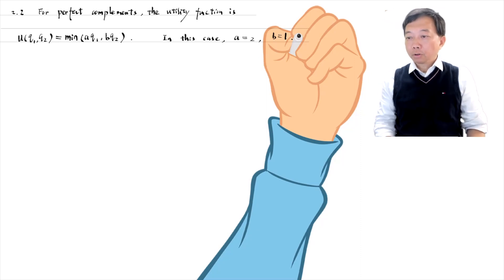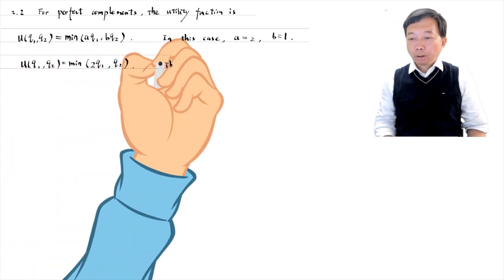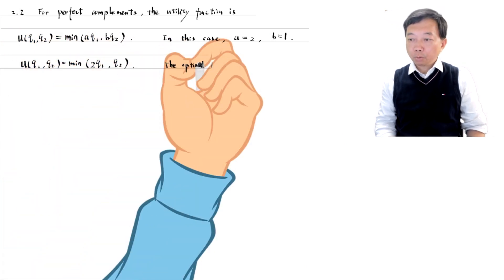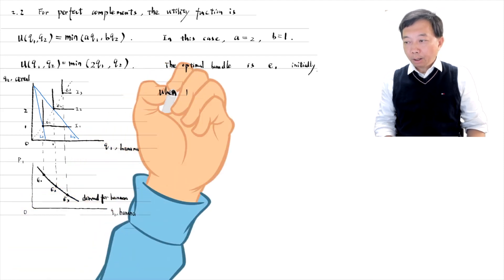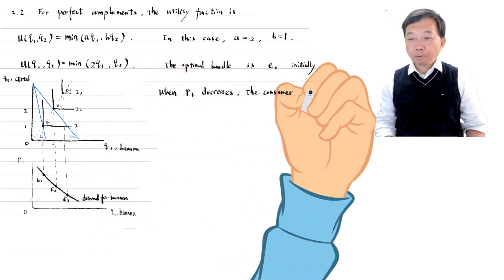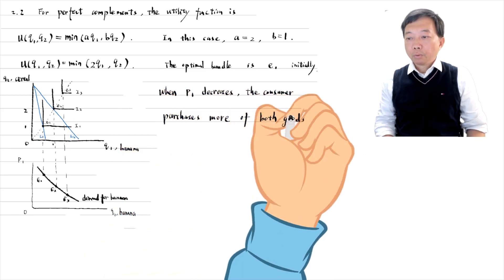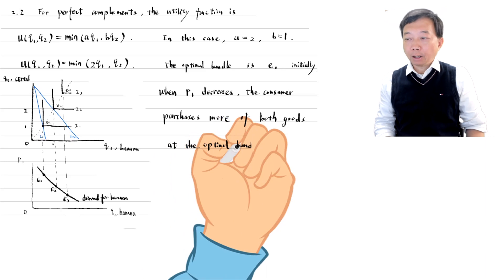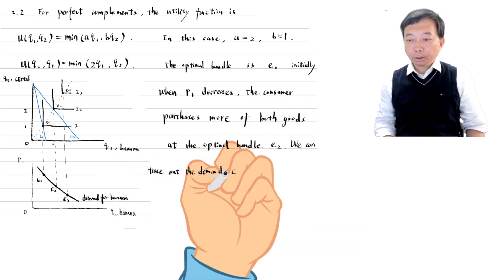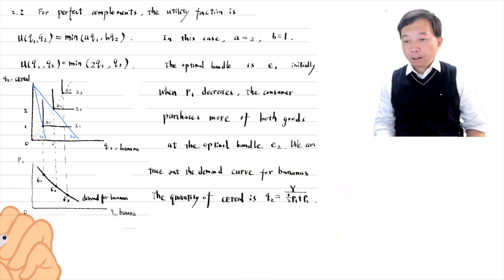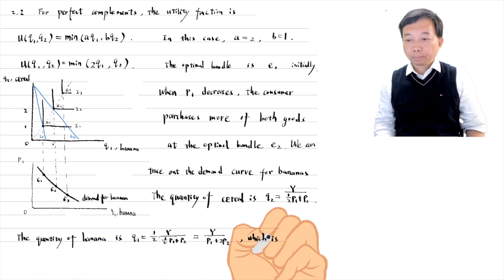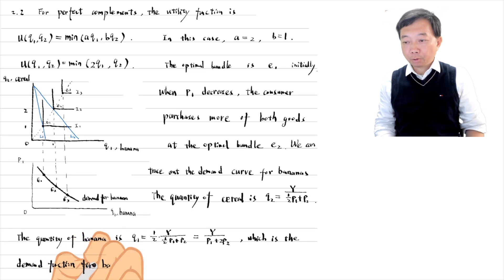So the utility function is as follows. The optimal bundles are the points where the highest indifference curves touch the budget lines. The optimal bundle is E1 initially. When P1 decreases, the consumer purchases more of both goods at the optimal bundle E2. We can trace out the demand curve for bananas. The optimal quantity of cereal demanded is as follows. The optimal quantity of bananas demanded is half of cereal. It is the demand function for bananas.